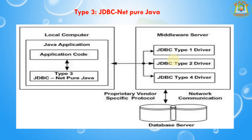Next I am going to discuss about Type 3 — the JDBC Net Pure Java driver. In Type 3, a 3-tier approach is used to access the database. The JDBC clients use standard network sockets to communicate with middleware application servers. The socket information is then translated by the middleware application server into the call format required by the database management system and forwarded to the database server. This kind of driver is extremely flexible since it requires no code installed on the client, and a single driver can actually provide access to multiple databases. You can think of the application server as a JDBC proxy, meaning it makes calls on behalf of the client application.